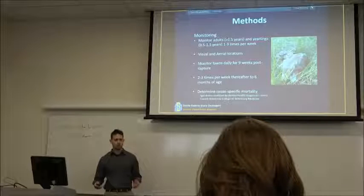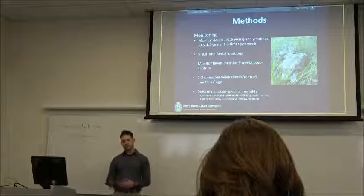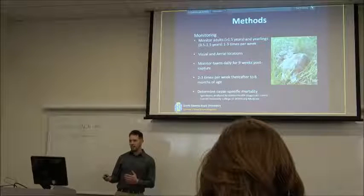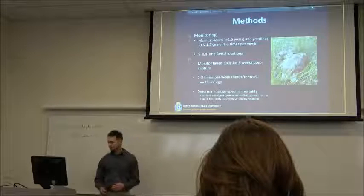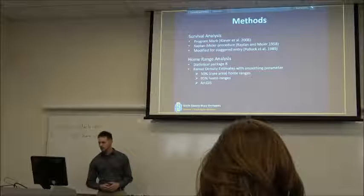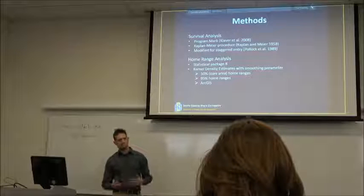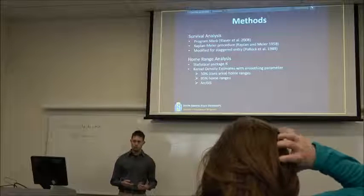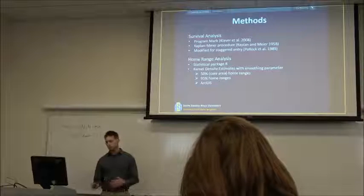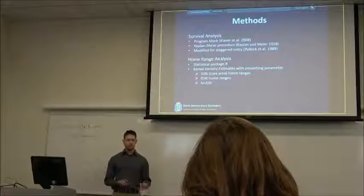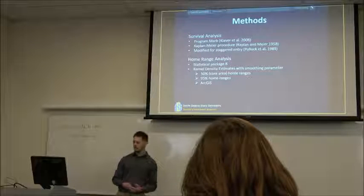For our fawns we're going to monitor them daily for nine weeks post-capture and then two to three times per week thereafter up to six months of age. At six months of age it will then be classified as yearlings and then we'll start collecting locational data on them as well for our analyses on home ranges and habitat selection. For any individuals where we can't determine cause-specific mortality in the field those specimens will be collected to either be analyzed here at South Dakota State University or at Cornell.